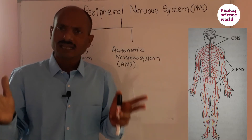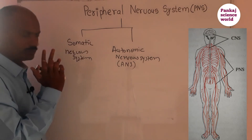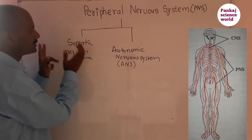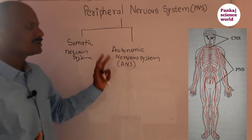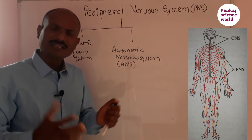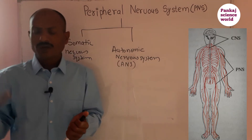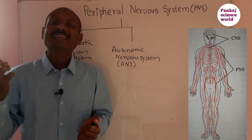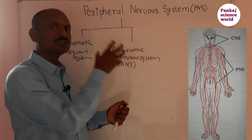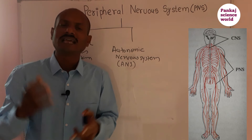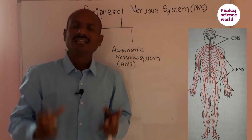All voluntary activities in our body — walking, talking, running — are under the control of the somatic nervous system. The autonomic nervous system includes the nerves of involuntary organs, connecting them to organs like the heart and lungs.